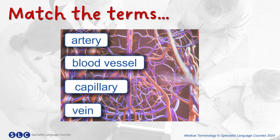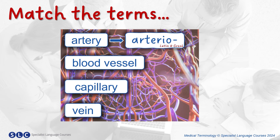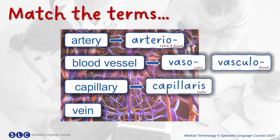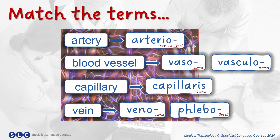And here are the answers. For artery, we have arterio, which is both Latin and Greek. Blood vessel: we have the Latin term vaso and Greek term vasculo. Capillary: we have the Latin term capillaries. And vein: we have Latin vino and Greek plebo.